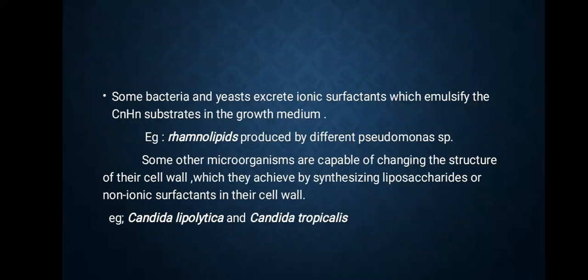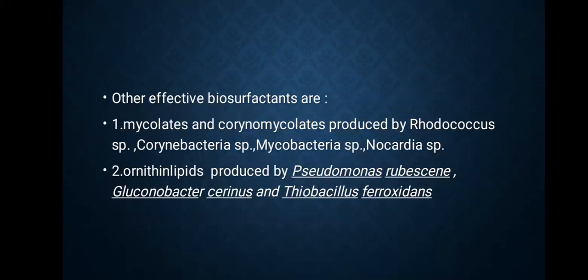Some bacteria and yeast excrete ionic surfactants which emulsify carbon-rich substrates in the growth medium, e.g. rhamnolipids produced by different Pseudomonas species. Some other microorganisms are capable of changing the structure of their cell wall by synthesizing lipopolysaccharides or non-ionic surfactants, e.g. Candida lipolytica and Candida tropicalis. Other effective biosurfactants are mycolates and corynomycolates produced by Rhodococcus, Corynebacterium, Mycobacterium, or Nocardia species, and ornithine lipids produced by Pseudomonas rubescens, Gluconobacter cerinus, and Thiobacillus ferrooxidans.